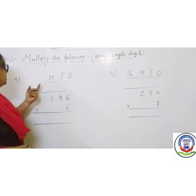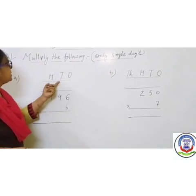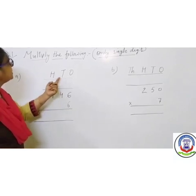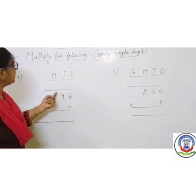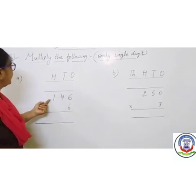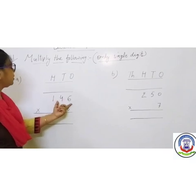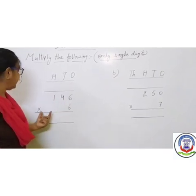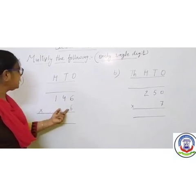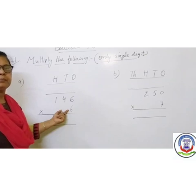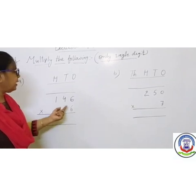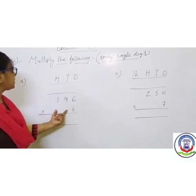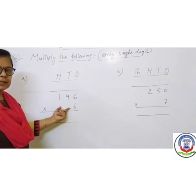Number 1 is 1's place is 6, 10's place is 4, 100's place is 1. This is called multiplication. Multiply by 6. Now we will multiply 146 times 6.